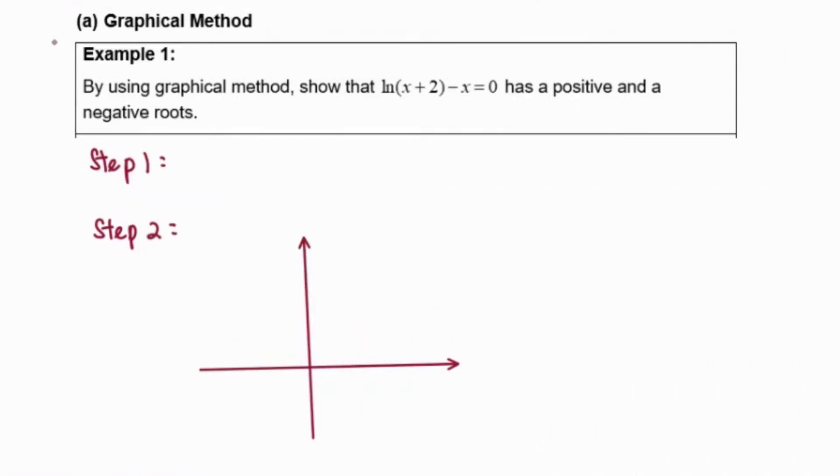Hi everyone, now we are going to discuss the graphical method. Example 1: By using graphical method, show that the equation ln(x+2) - x = 0 has a positive and a negative root.